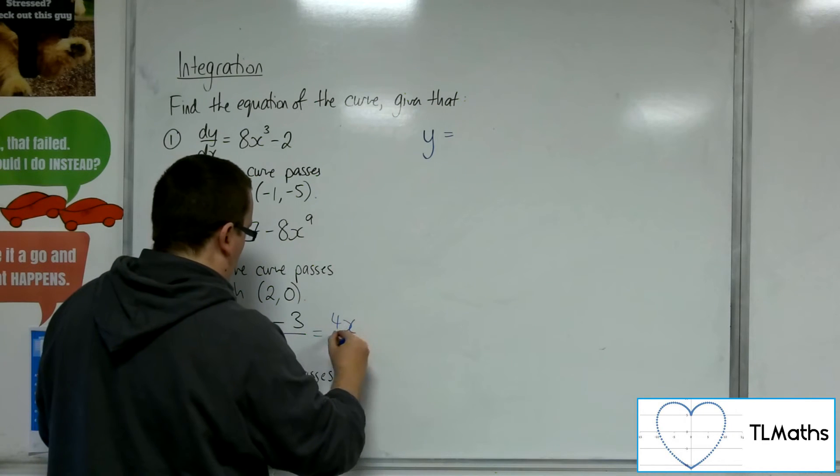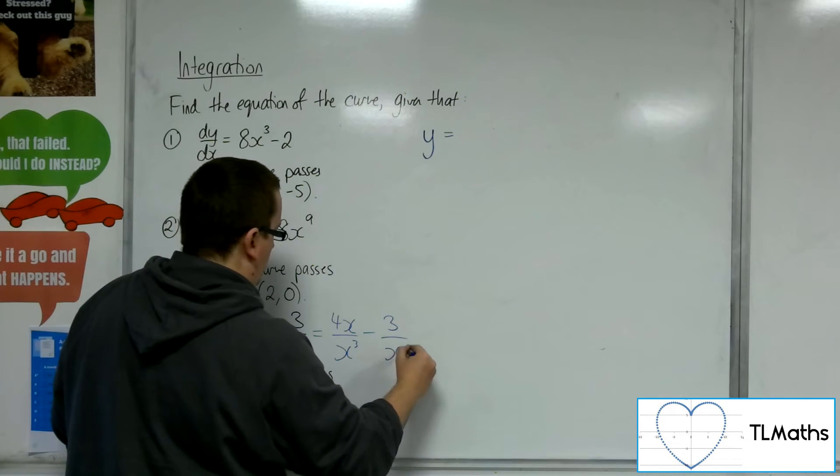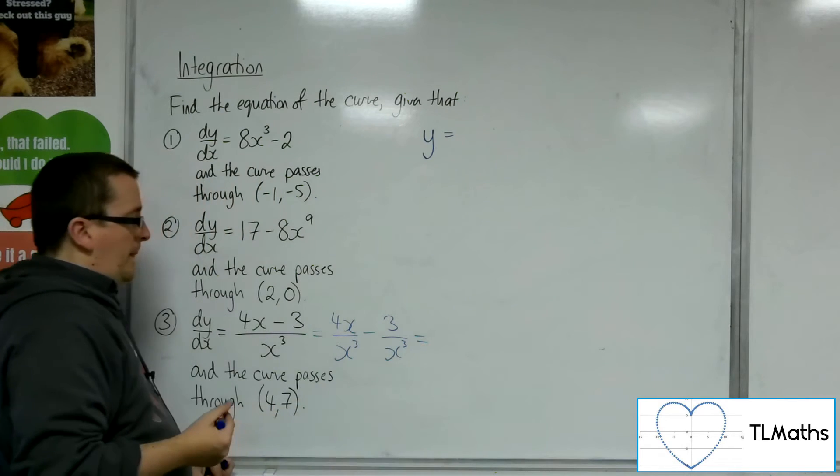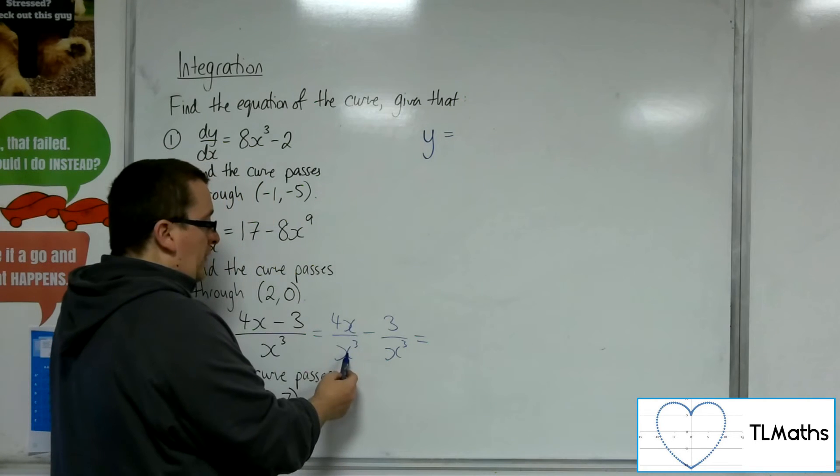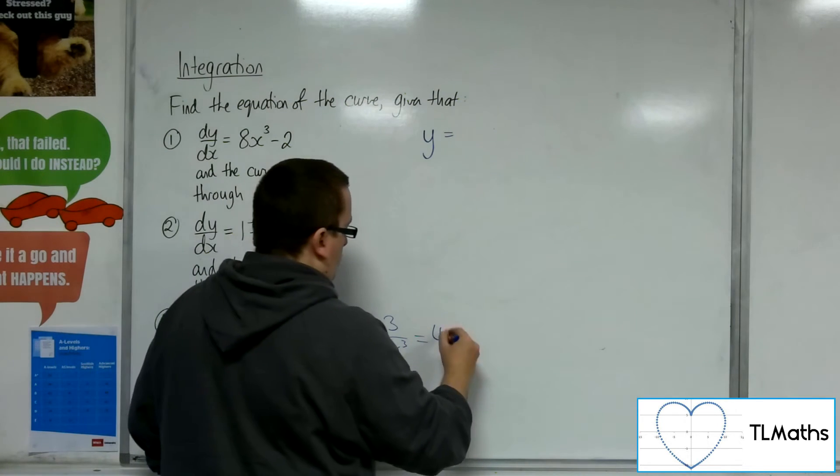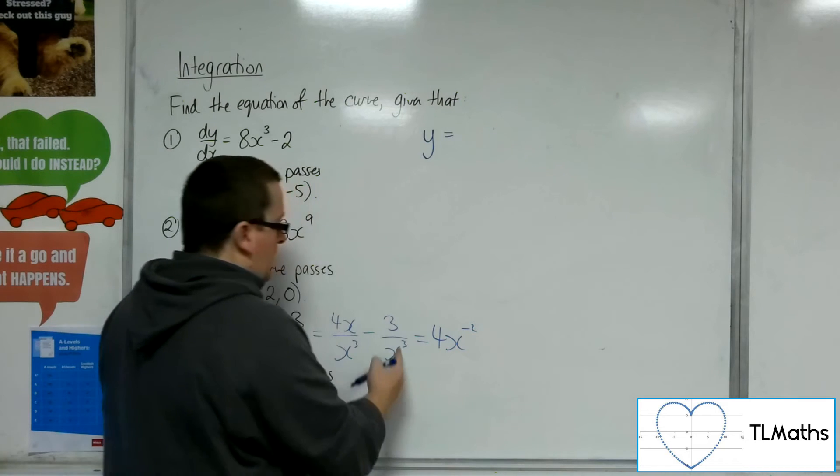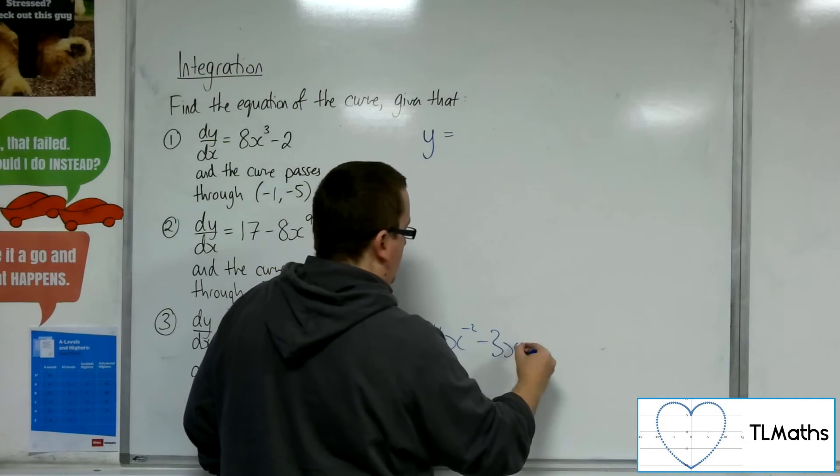So 4x/x³ - 3/x³. Now if we simplify that, 4x/x³, x over x³, x¹ divided by x³ is x⁻². So 4x⁻². And then we've got -3/x³, which is -3x⁻³.